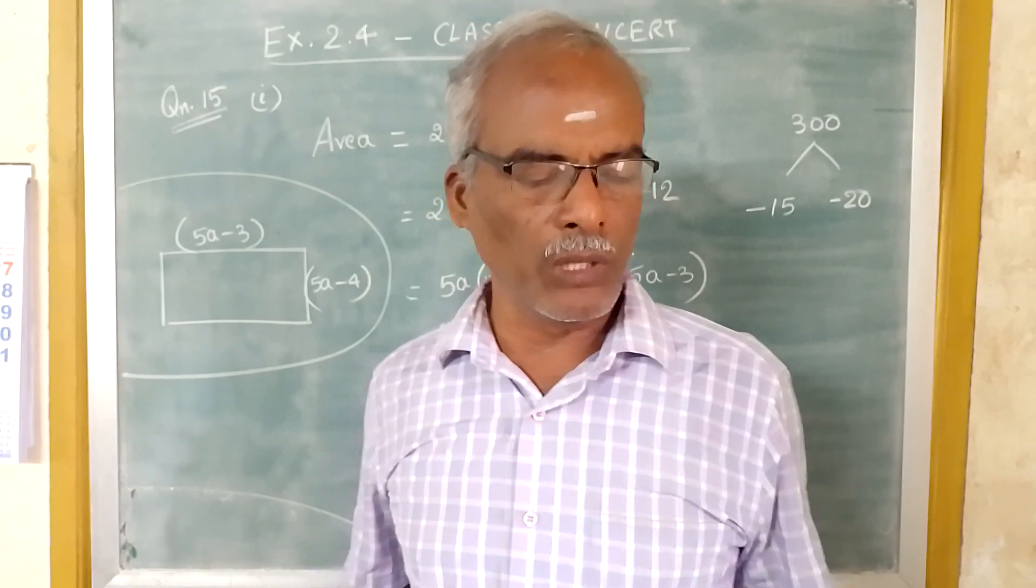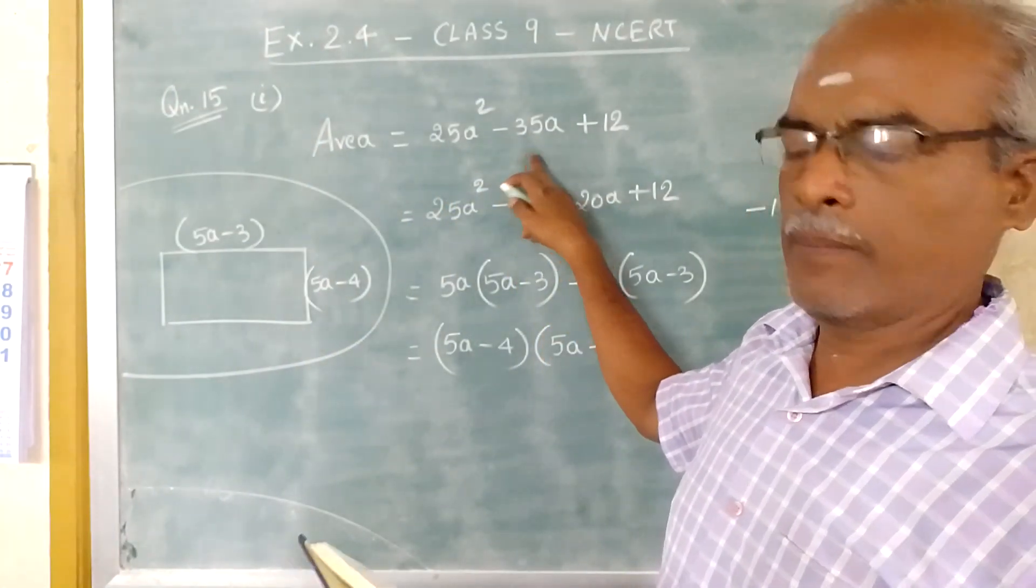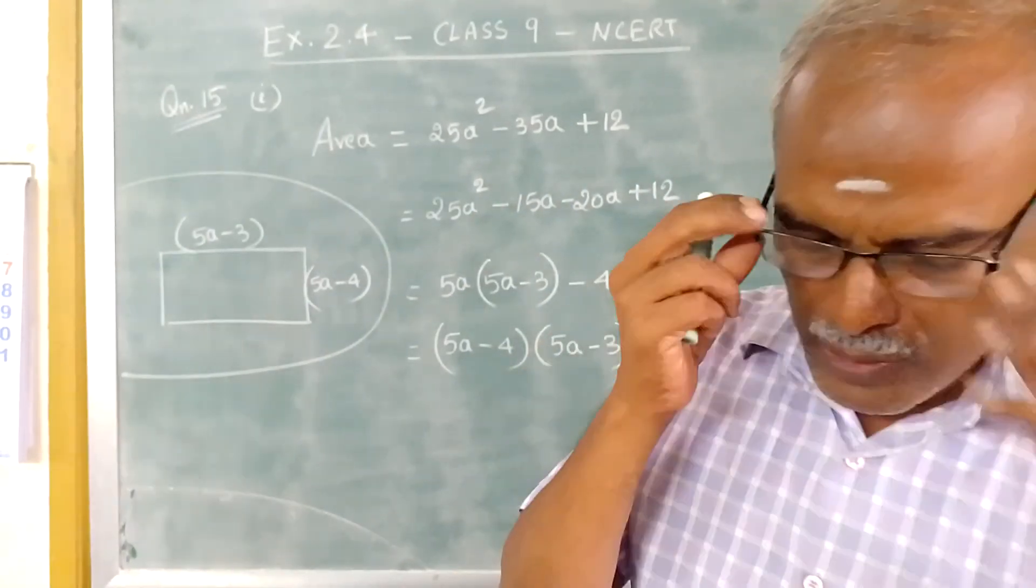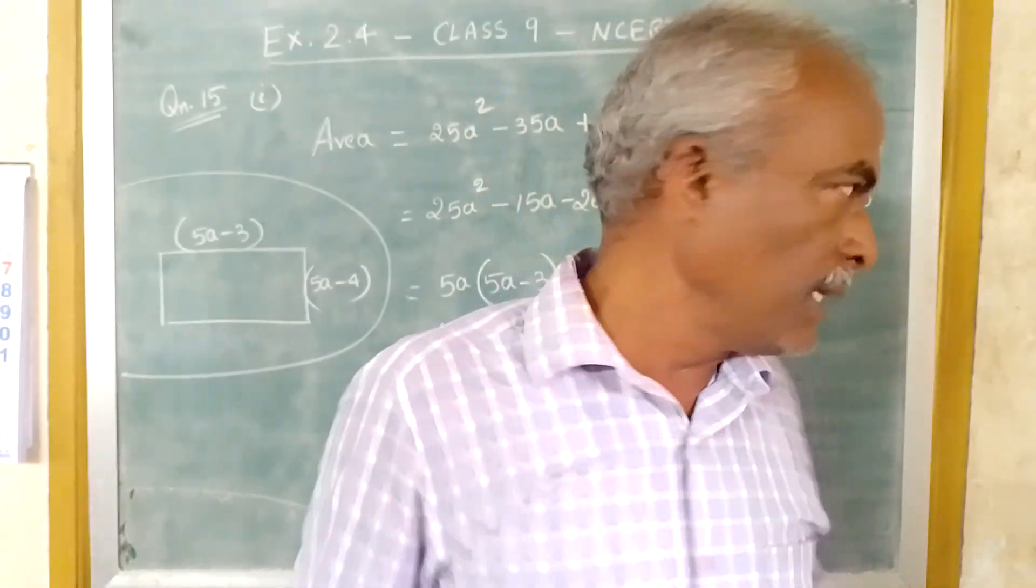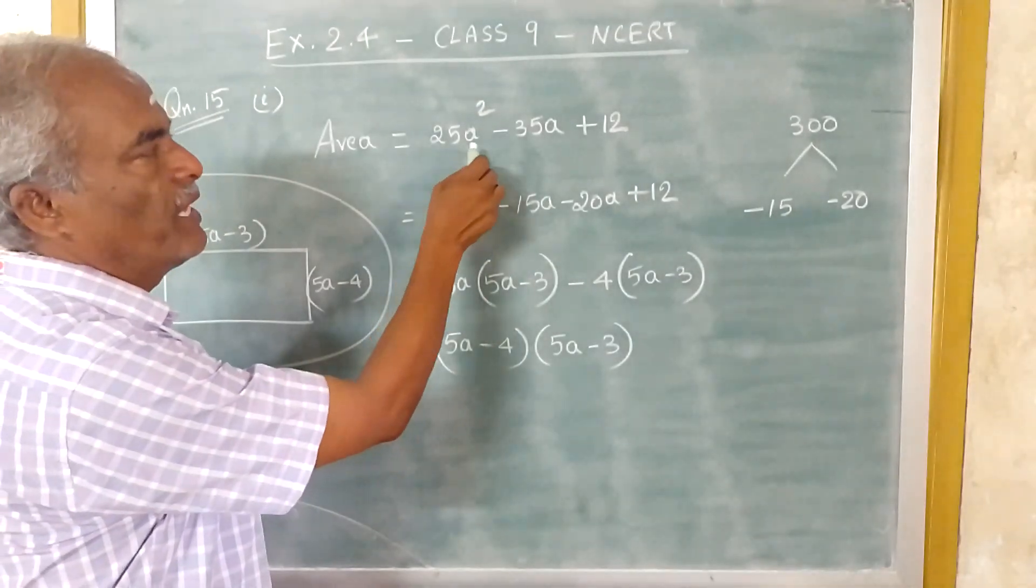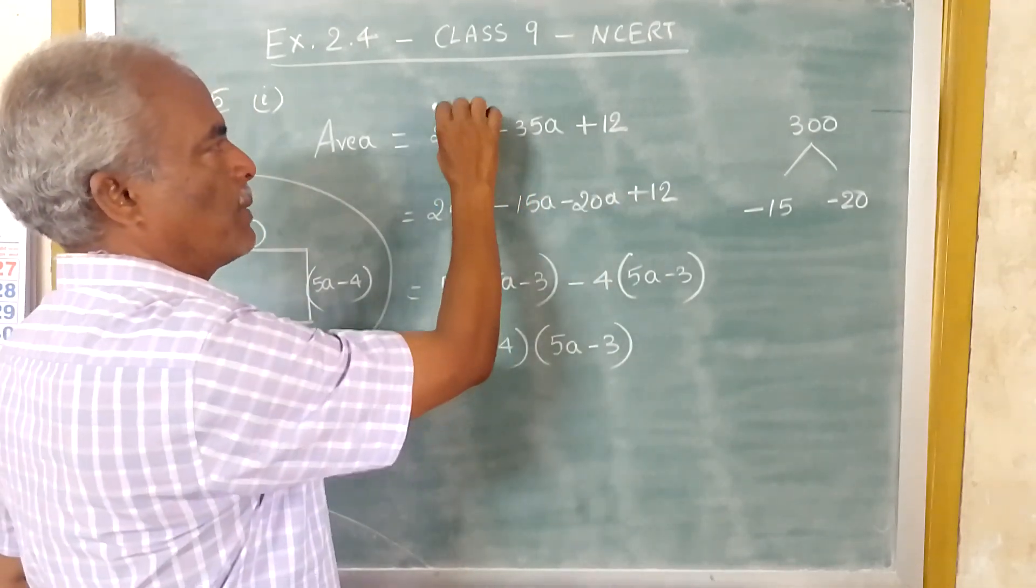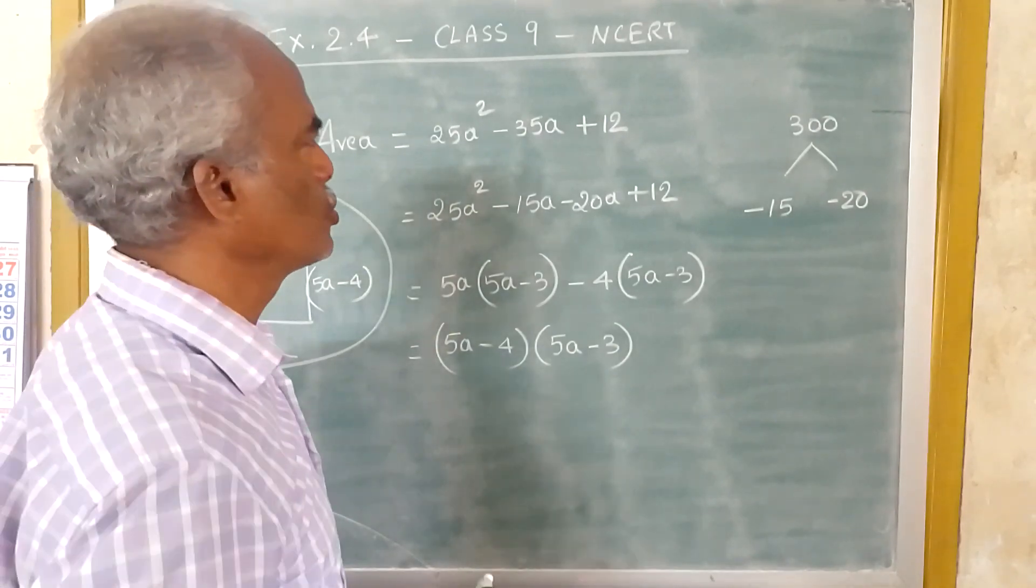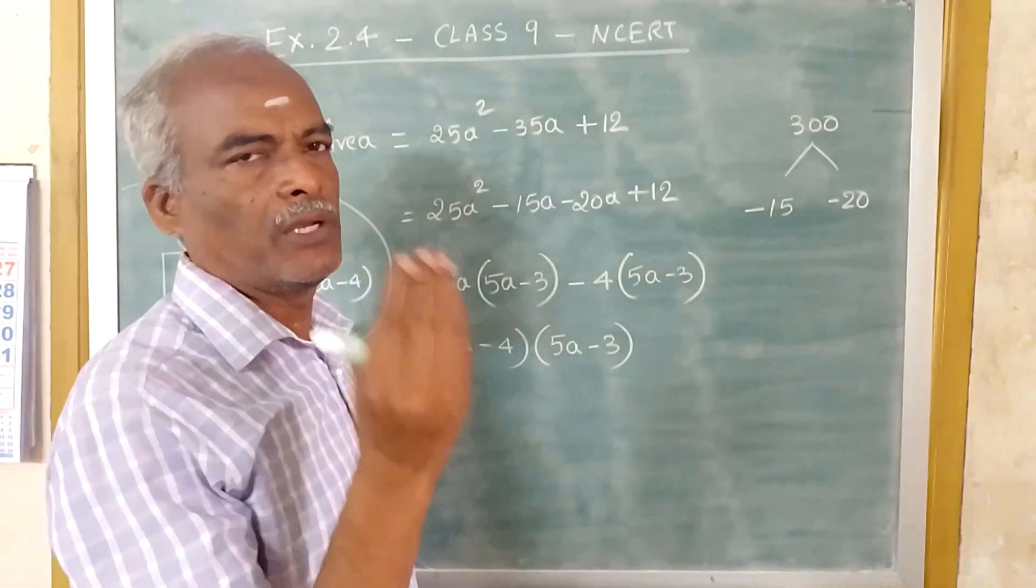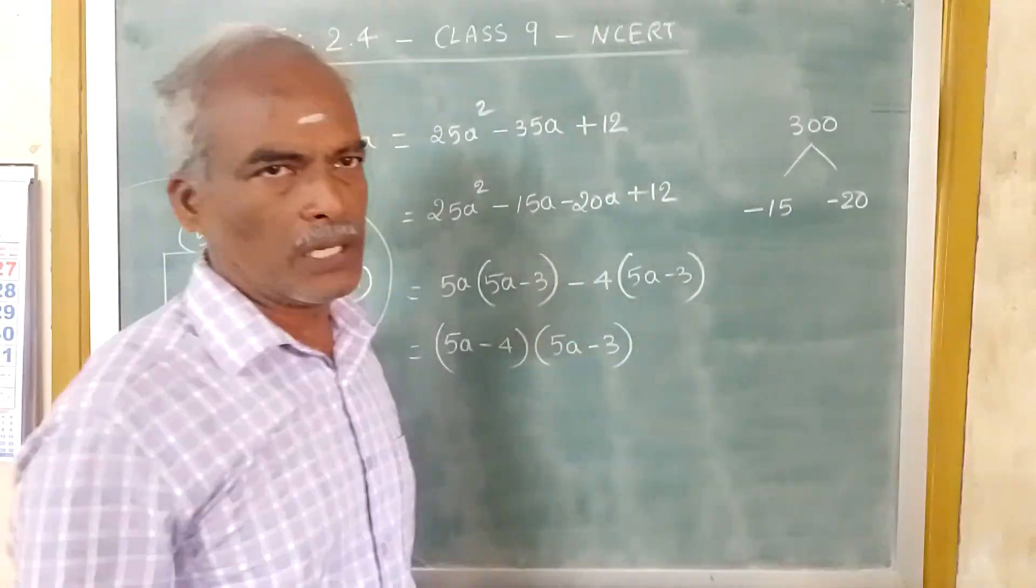So area is equal to 25A square minus 35A plus 12. Now we have to find the length and breadth. Area is given. Now you multiply this 25 and 12. 25 into 12 will give you 300.